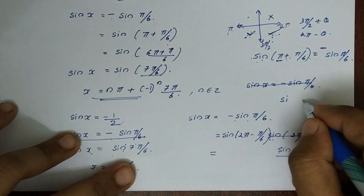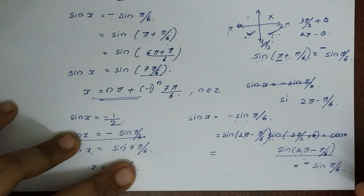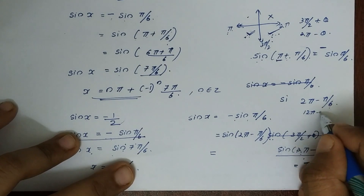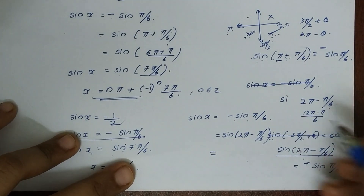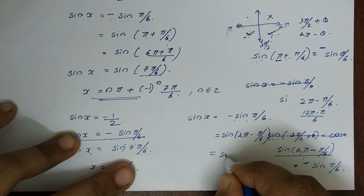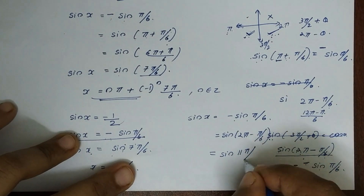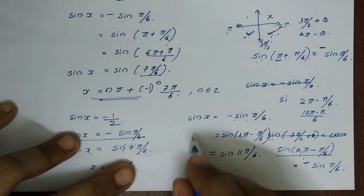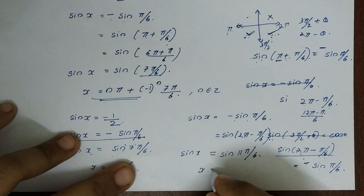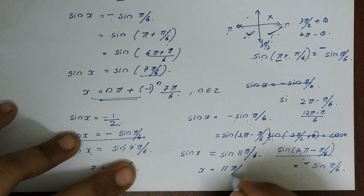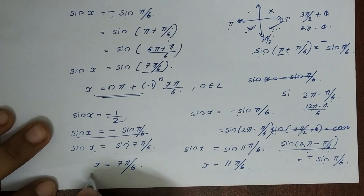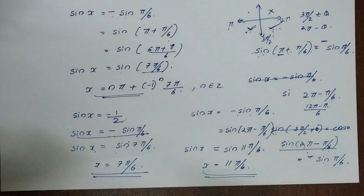2π minus π/6: computing this gives (12π minus π) divided by 6, which equals 11π/6. So sin(11π/6). Therefore sin x is equal to sin(11π/6), giving x equal to 11π/6. So x equals 7π/6 and x equals 11π/6.